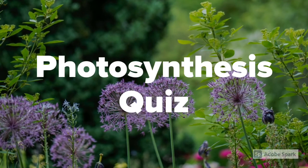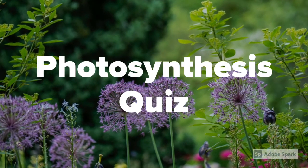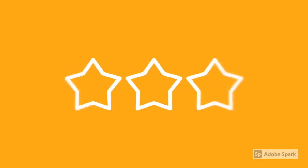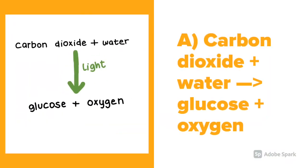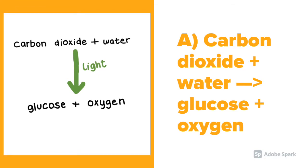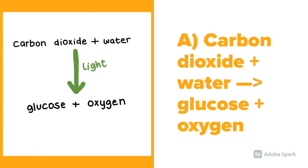Photosynthesis Quiz. Question number 1: Write the word equation for photosynthesis. The answer is carbon dioxide plus water, in the presence of light, gives glucose plus oxygen.